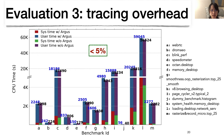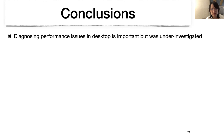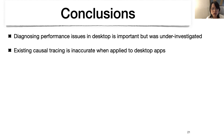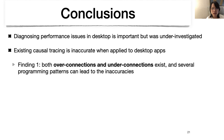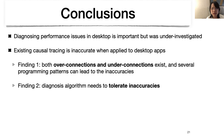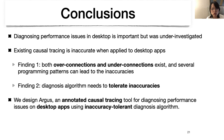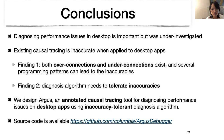To conclude, diagnosing performance issues in desktop applications is important but was under-investigated. Existing causal tracing is inaccurate when applied to desktop apps, showing both over-connections and under-connections. Several program patterns can lead to inaccuracies. The diagnosis algorithm needs to tolerate inaccuracies. So we designed Argus, an annotated causal tracing tool for diagnosing performance issues on desktop apps, using an inaccuracy-tolerant diagnosis algorithm. The source code is available on GitHub. Thank you for listening.